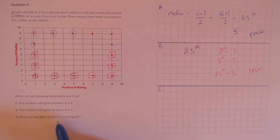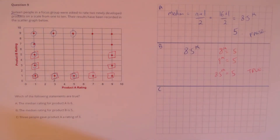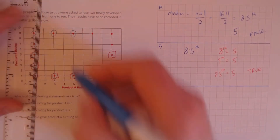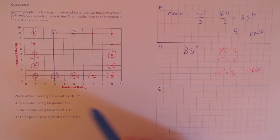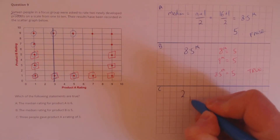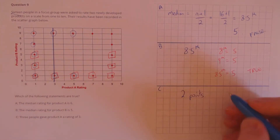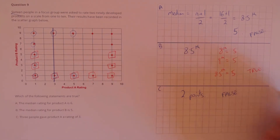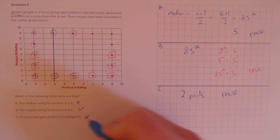Finally, statement C: three people gave product A a rating of 3. Looking at product A on the rating-3 line, we only have two points that gave a rating of 3, so that is false. Our final answers: false, true, and false.